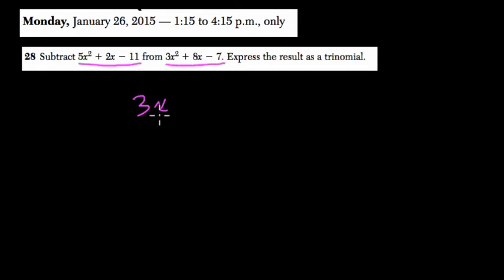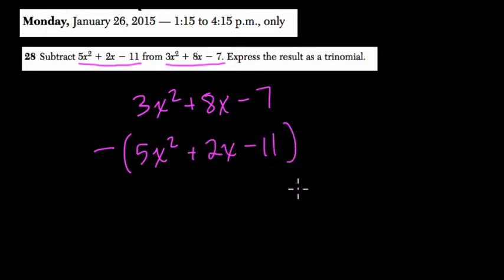So that means 3x squared plus 8x minus 7. We're subtracting 5x squared plus 2x and minus 11 from 3x squared plus 8x minus 7.